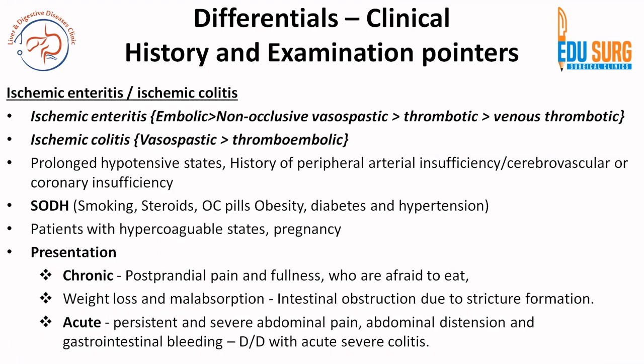Coming to ischemic enteritis or ischemic colitis — understand that ischemia can affect both small intestine and large intestine. For ischemic enteritis, the commonest type is embolic, which is more common than non-occlusive vasospastic, which is more common than thrombotic, which is more common than venous thrombotic. On the other hand, in ischemic colitis, vasospastic is more common than embolic or thrombotic. This is a very commonly asked question, and it's important to understand because the therapeutic options change based on the site of ischemia.